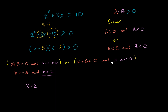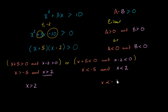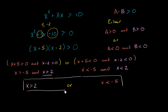Or both expressions are negative: x plus 5 less than 0 and x minus 2 less than 0, which gives x less than negative 5 and x less than 2. Since any x less than negative 5 is automatically less than 2, this simplifies to x is less than negative 5. So the full solution set is x greater than 2 or x less than negative 5.